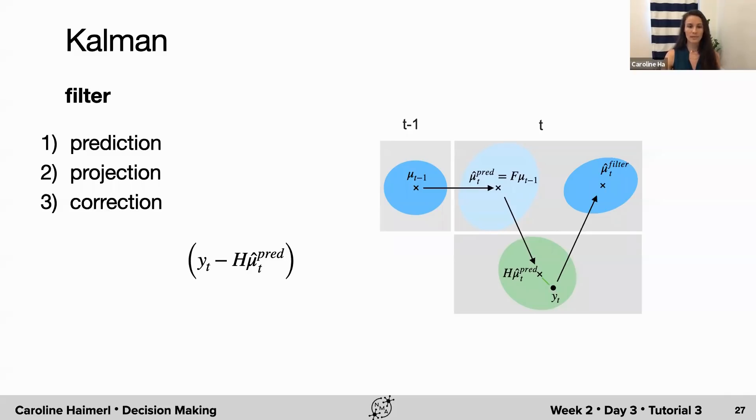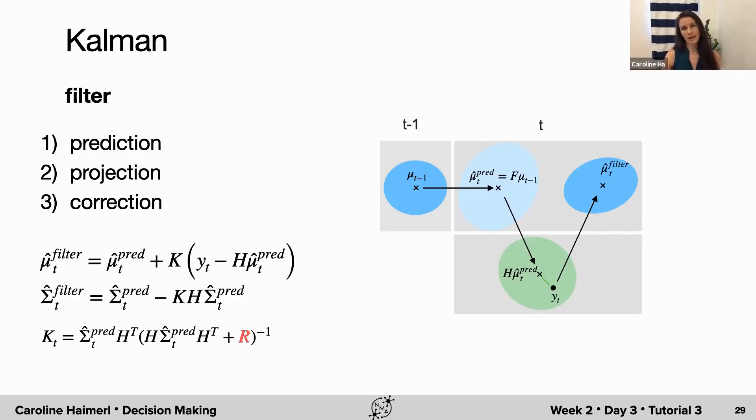Given this comparison, we can derive a correction now back for our initial estimate of the latent distribution. This correction will change the mean and the covariance by a factor called the Kalman gain. The Kalman gain compares our certainty about the prior prediction in latent space to our certainty about our data measurements. Importantly, the Kalman gain depends inversely on the measurement noise R.